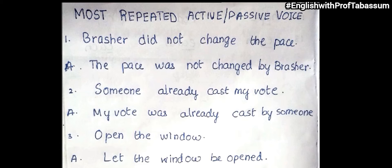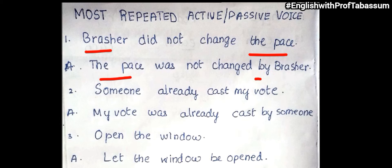So first one: 'Brasher did not change the pace.' The answer would be — first you are going to make the object as the subject and the subject as the object, and before that you have to use 'by'. Since it is 'did not', it will change to 'was not', and 'change' will change to its V3 form. So 'Brasher did not change the pace' will change to 'The pace was not changed by Brasher.'